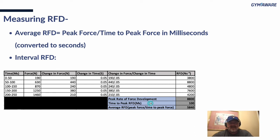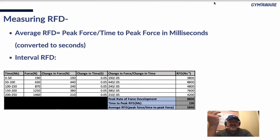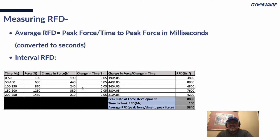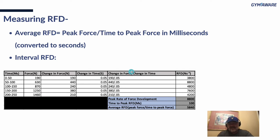Time to peak rate of force development is simply the time it took to reach that peak — in this example 100 milliseconds. For average RFD: if peak force produced was 1,460 Newtons and it took 250 milliseconds to get there, you divide 1,460 by 0.250 seconds to get an average RFD of 5,840 N·s⁻¹. Having interval measurements gives you a lot of good information about early versus late force production.